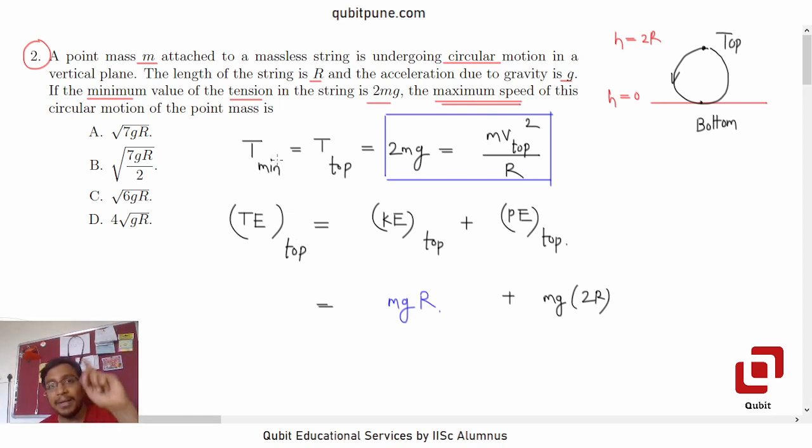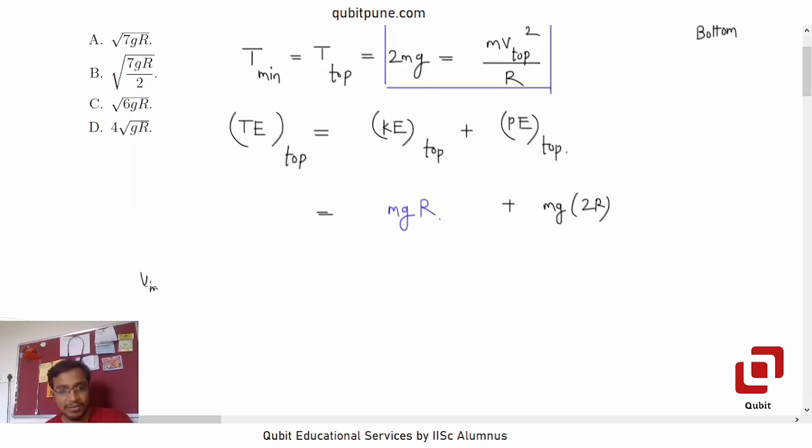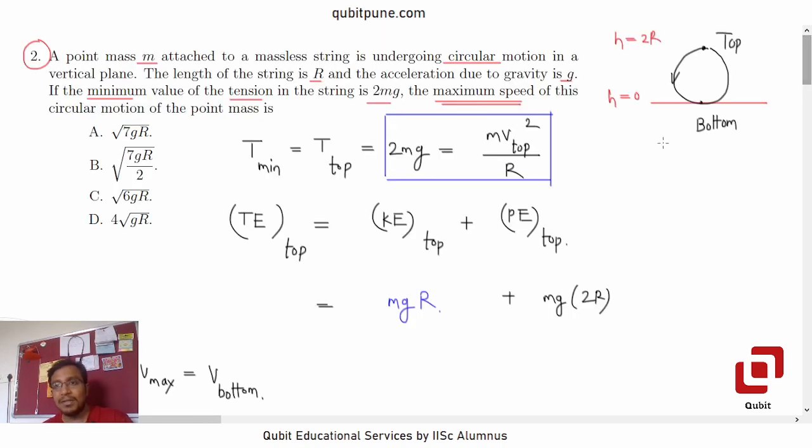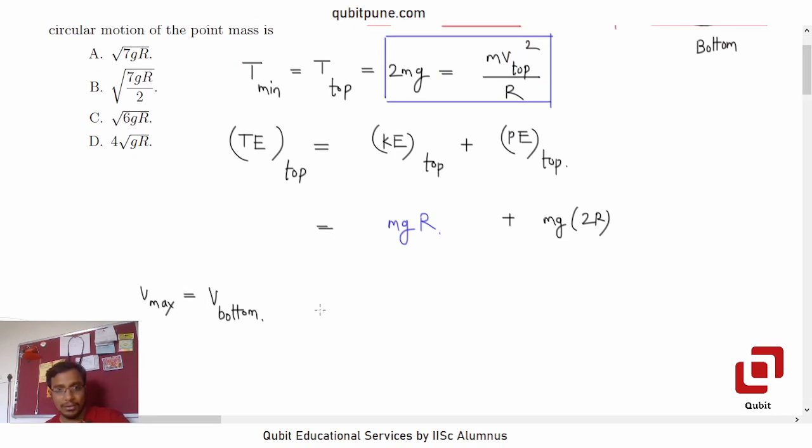Now, just like tension is minimum at the top, the velocity or the speed is maximum at the bottom. They want us to determine the maximum speed, so maximum speed v_max is when the particle is at the bottom. And because we have set our reference to measure, to define the potential energy as the bottom itself, it will not have any potential energy there, it will be mg into 0. So what is the total energy at the bottom? The total energy at the bottom will be purely kinetic.